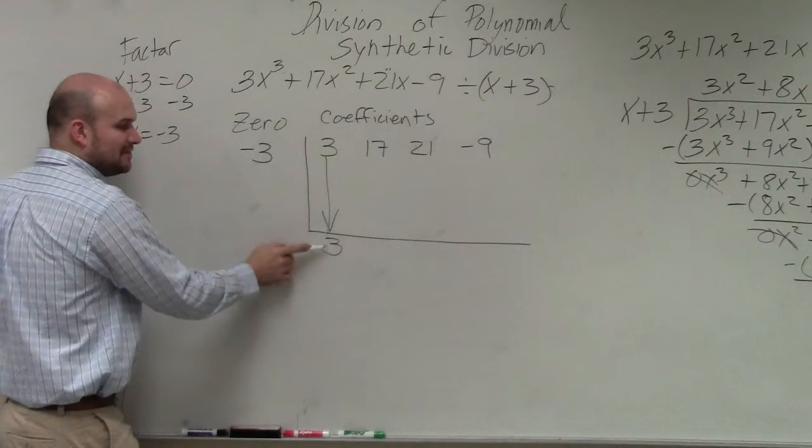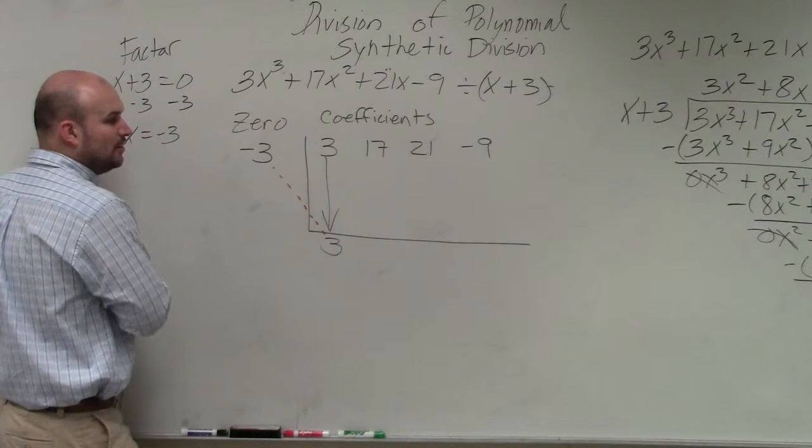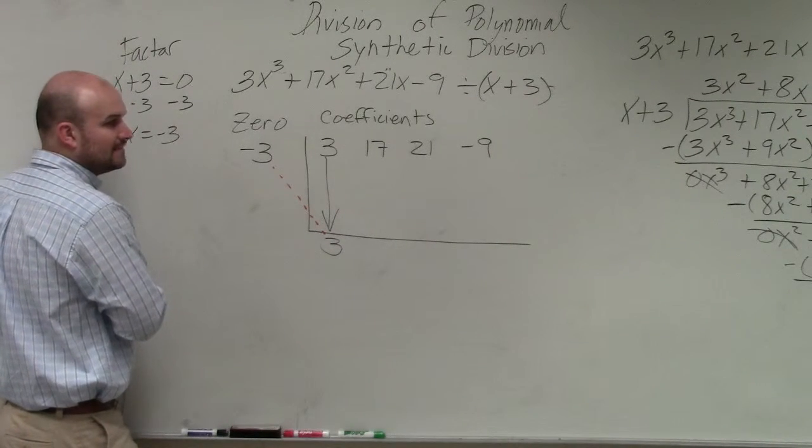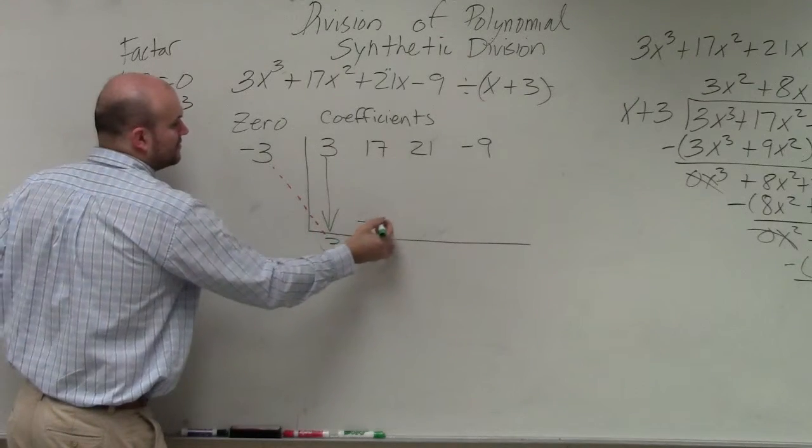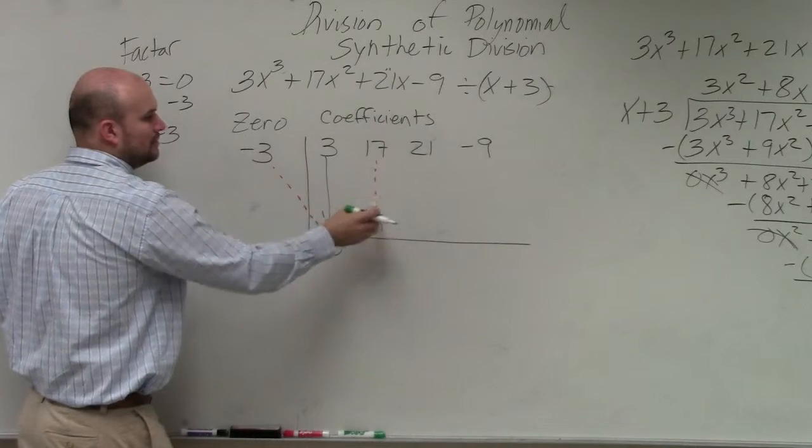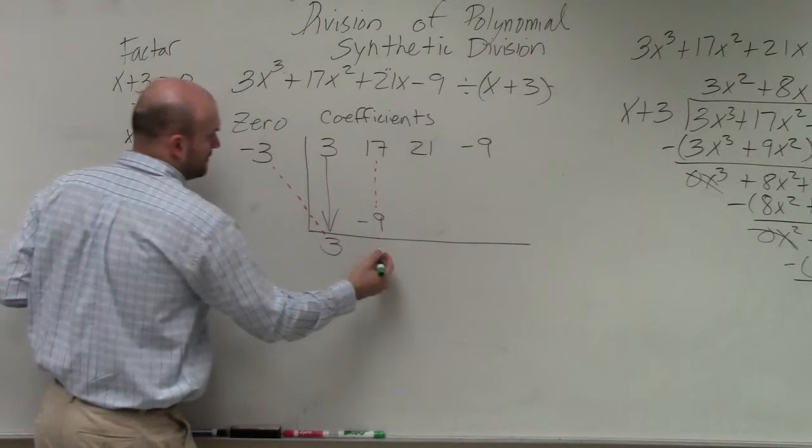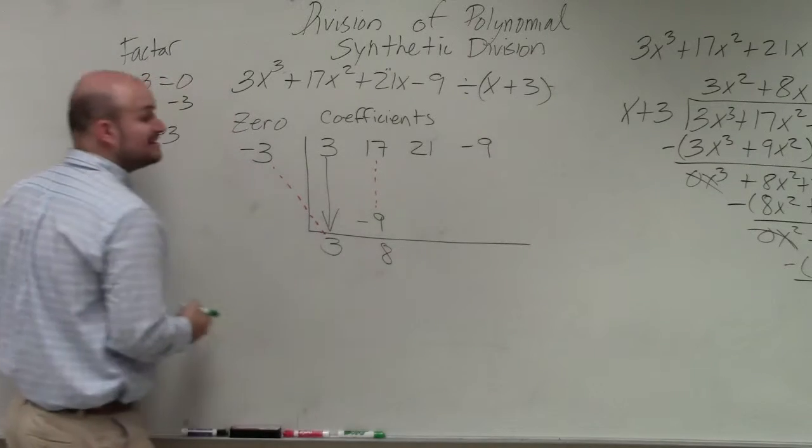So bring down the 3. Now what you're going to do is multiply on the diagonal. What is 3 times negative 3? Negative 9. Now we add on the vertical. What is 17 plus negative 9? Positive 8.